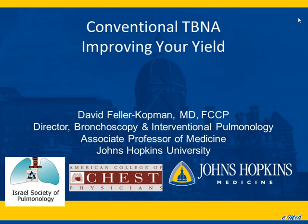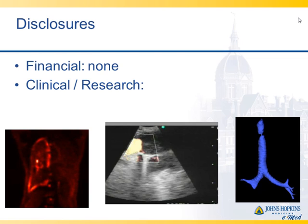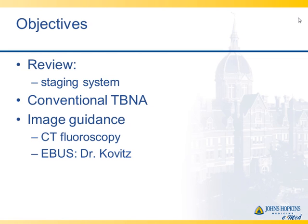I want to spend the next 20 minutes or so talking about a non-interventional procedure, which is basic TBNA. If we're not doing EBUS, what could we do to improve our yield with conventional TBNA? I don't have any conflicts of interest related to this talk from a financial perspective, and my clinical and research conflicts of interest are primarily on malignant pleural disease, endobronchial ultrasound, and central airway obstruction. I want to review the current staging system, talk about why it's important to do TBNA — be it conventional or EBUS — talk about conventional TBNA, and then a little bit on image guidance, mainly CT fluoroscopy.